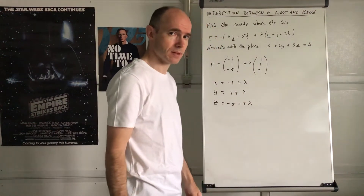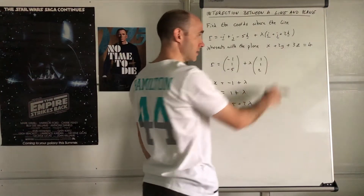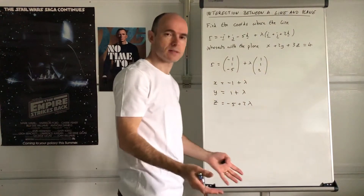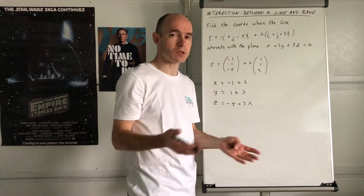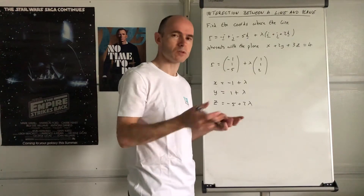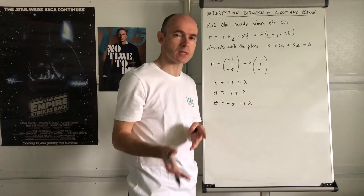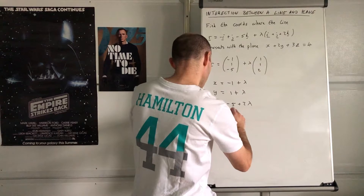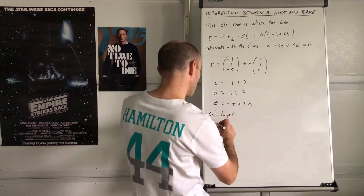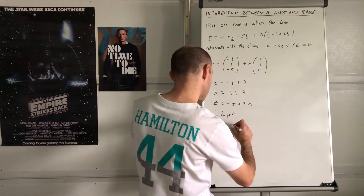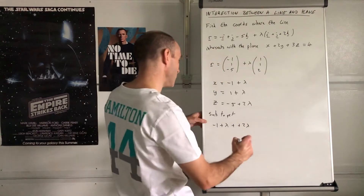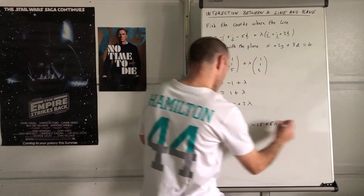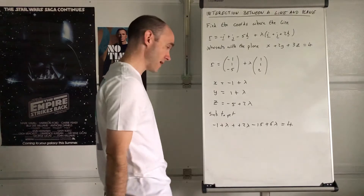Can you see what we're going to do? We're going to find where the line intersects the plane. All we're going to do is substitute those three expressions into the plane equation. That's it - it's very similar to the intersection of two lines, where you make one variable the subject and substitute in.